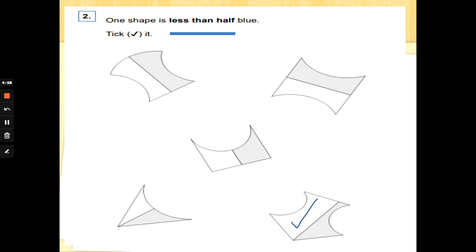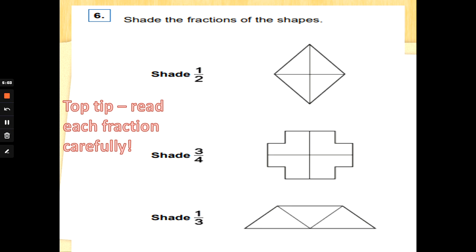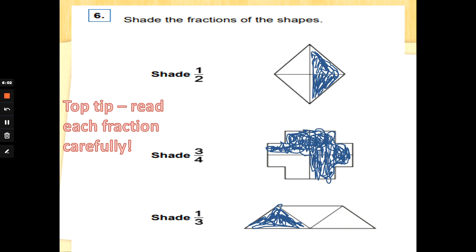Number 6. Shade the fractions of the shapes. Shade means colour in. Read each fraction carefully. The top one says shade one half. I can see that it's been split into one, two, three, four pieces. But it doesn't ask you to shade in one quarter. We need to colour in half of that diamond shape. And half is split down the middle. Shade three quarters. It's been split into one, two, three, four parts. We need to colour in three pieces of that shape. Three quarters. The bottom fraction says shade one third. The shape has been split into three. That's where the three comes from in the fraction. And the top number is one. We just have to colour one section of that shape to colour one third.